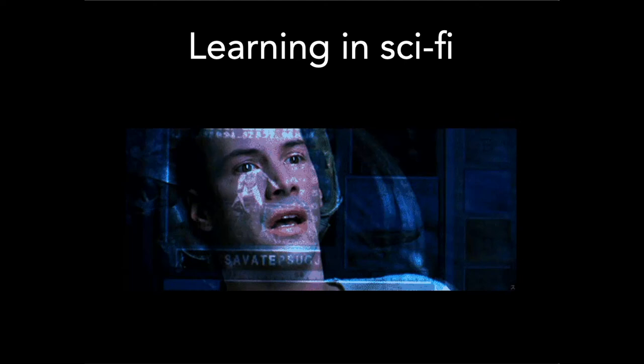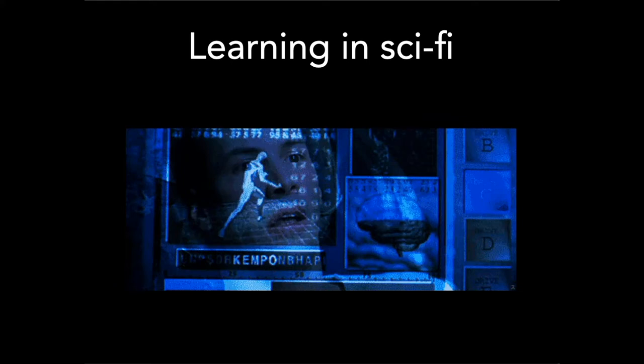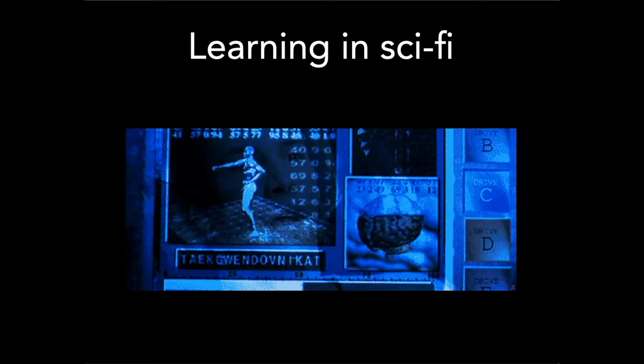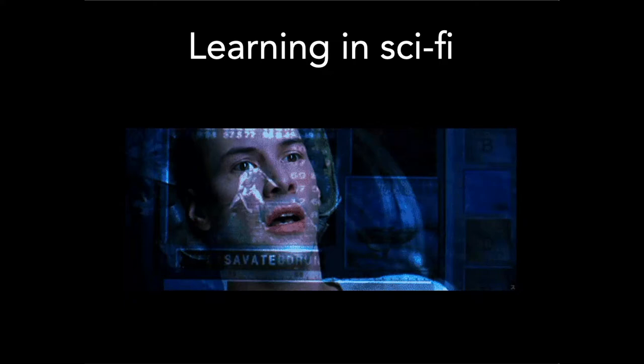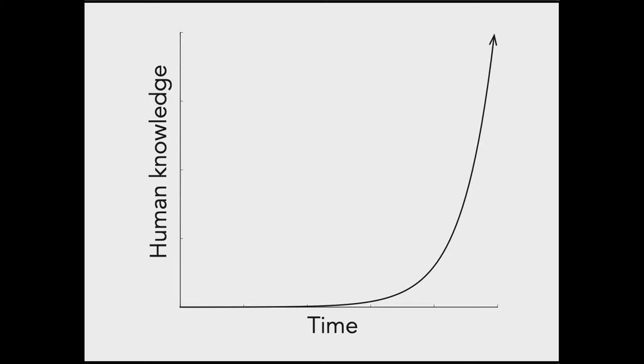In the science fiction world, technology-enhanced learning is super easy — from The Matrix, you just download information you want to know directly into your brain, hard drive style, and suddenly you know Kung Fu or how to fly a helicopter. But in the real world, learning is harder. I view this not just as a research problem, but as a societal challenge that we're going to need to solve as a species.